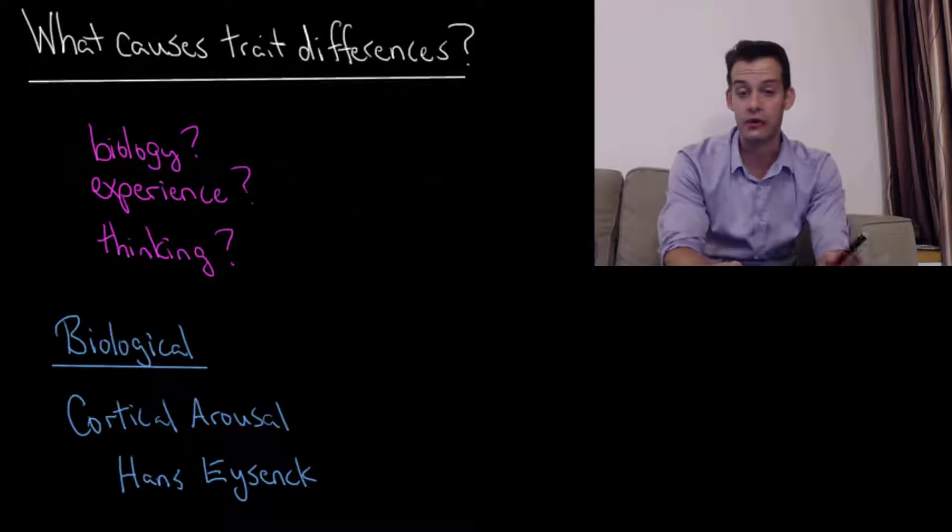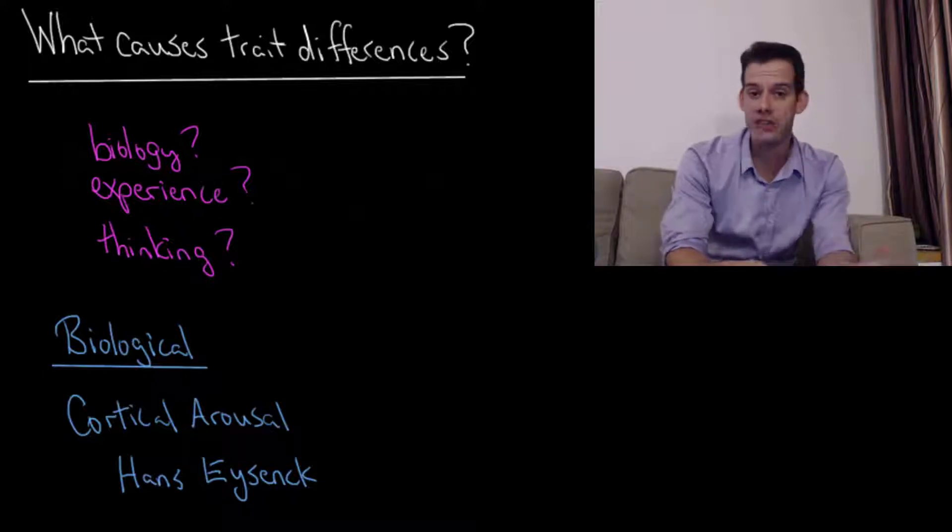We might wonder if it has something to do with their biology, maybe it's hormones or neurotransmitter levels that are influencing this, or maybe it has to do with their past and their upbringing. Maybe previous rewards and punishments have shaped their behavior and that's responsible for the difference that we see for this particular trait.